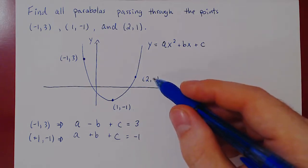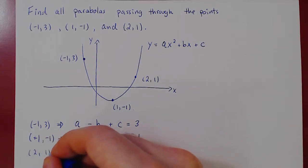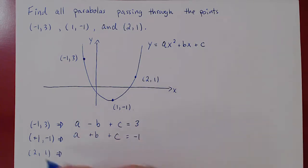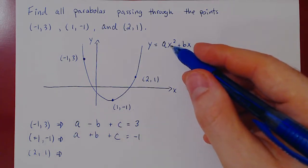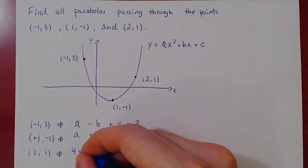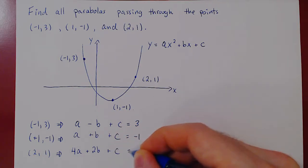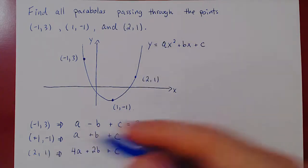And finally, third point, third equation, positive two, positive one. If you replace x by two, then you get 4a plus 2b plus c, which equals y, which in this case is positive one.